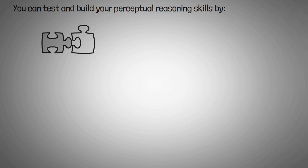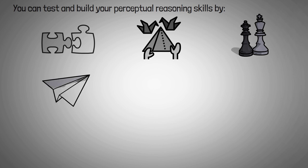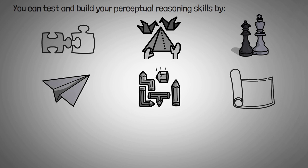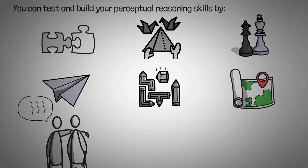You can test and build your perceptual reasoning skills by playing with puzzles, including 3D puzzles, learning origami, challenging your friend or a computer to a game of chess, building a model airplane, playing a video game like Tetris, using a physical map to get around a new city, communicating with a friend without words, or trying a new sport or physical practice.